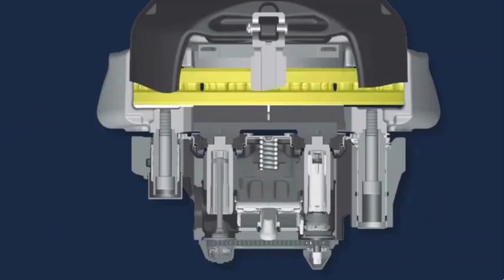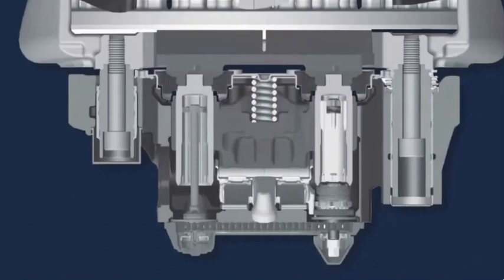Here we can see the rotor, bridge, return spring, and brake pads. Within the bridge, we can see the threaded tube, adjuster unit, and turning device that are part of the automatic brake adjuster.